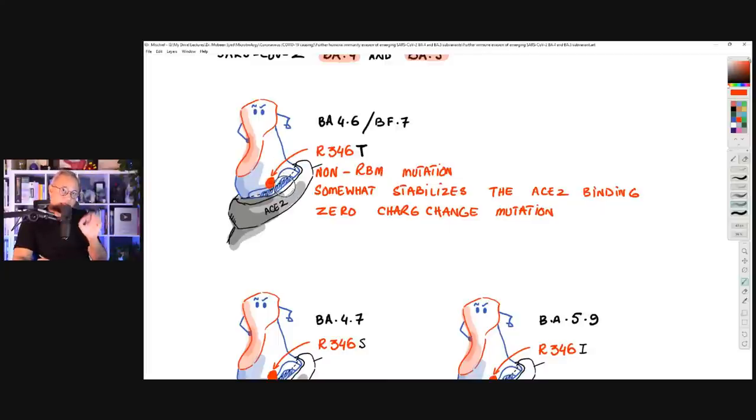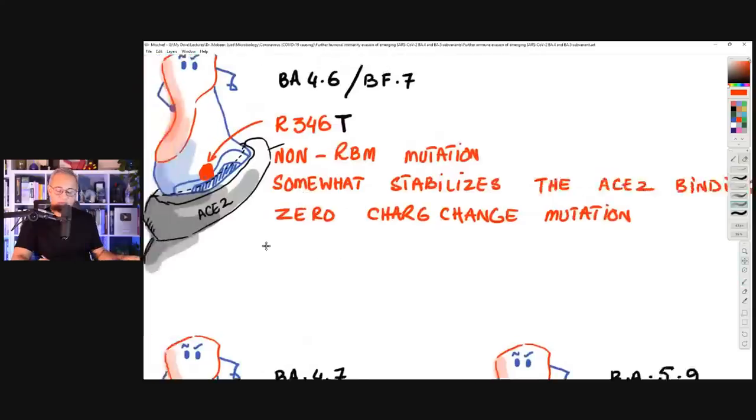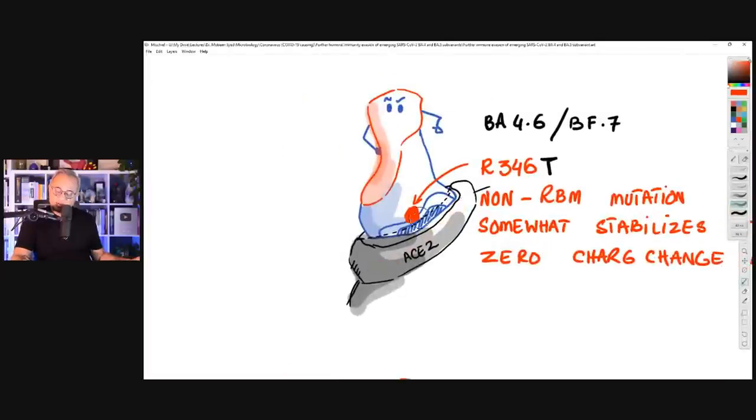This mutation is near the receptor binding domain. So that is this area where the spike protein is bound. This is the receptor. This is the receptor binding domain. On the receptor binding domain, this little dashed line area is the receptor binding motif. This mutation is not on the motif, but still near the receptor binding domain. Still not enough to interrupt the binding.